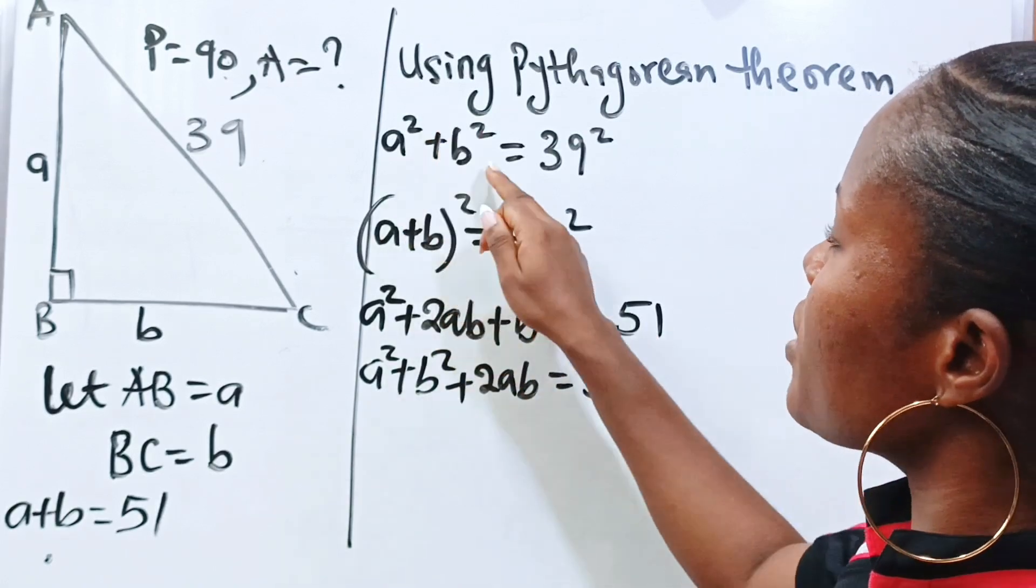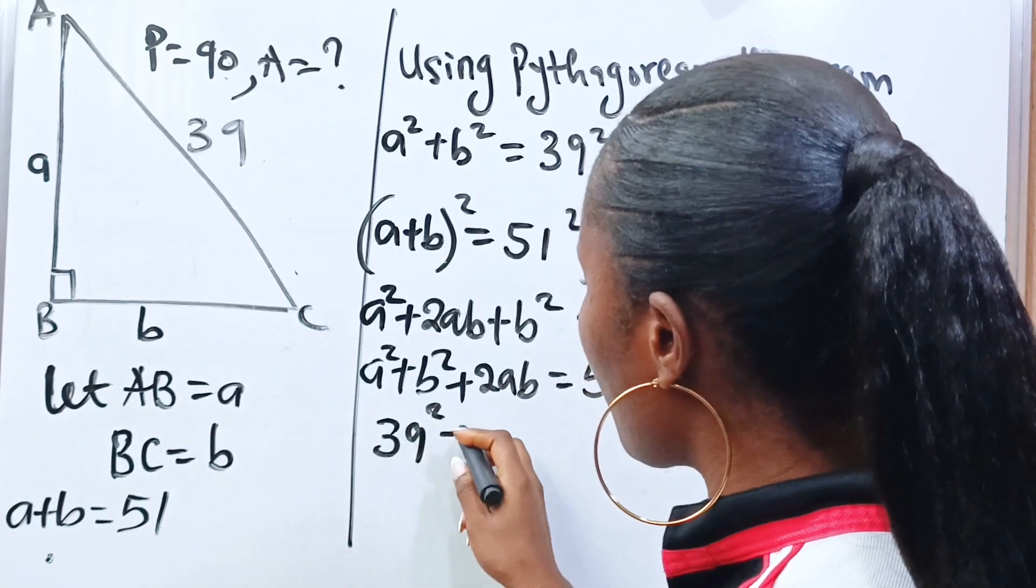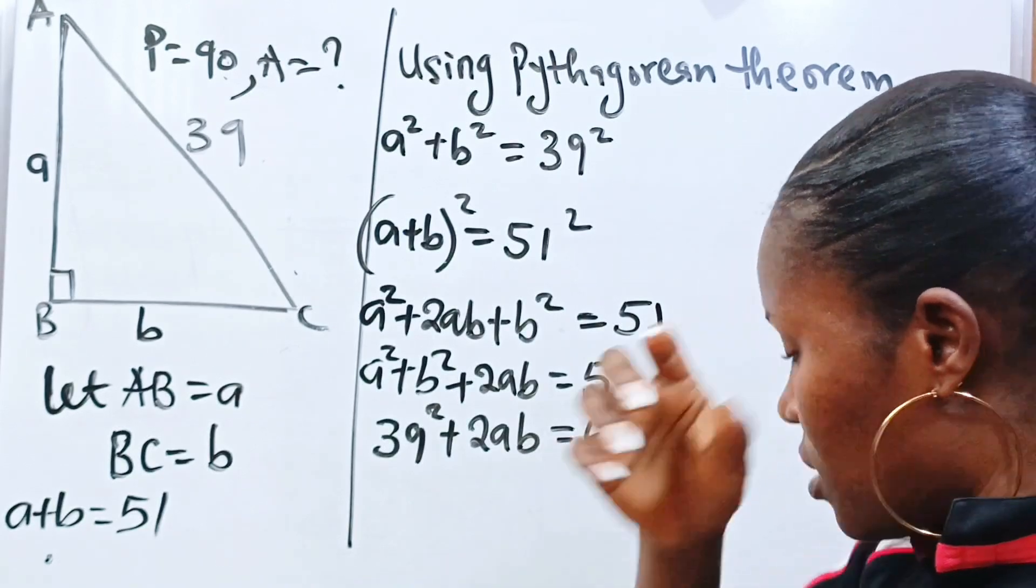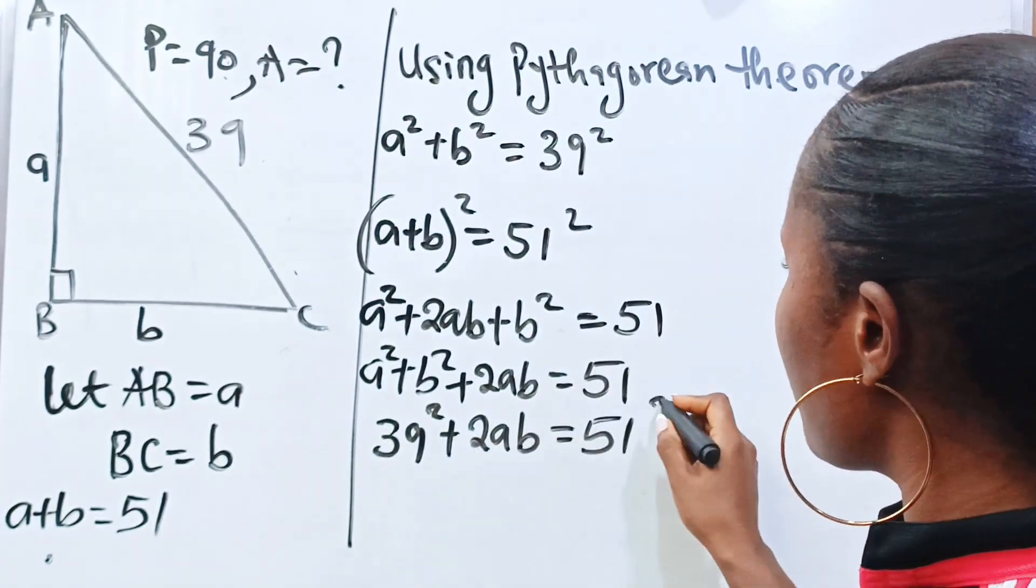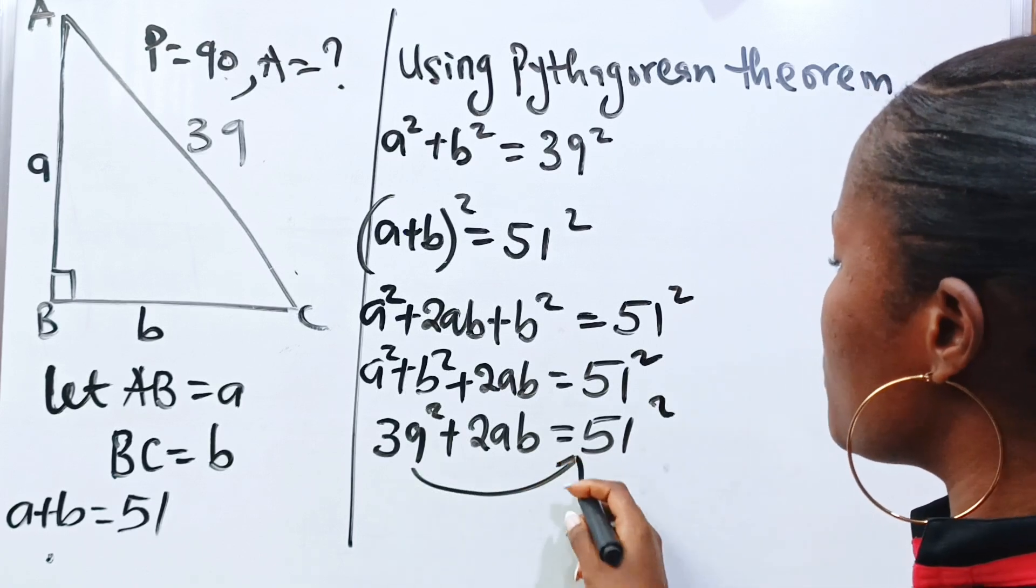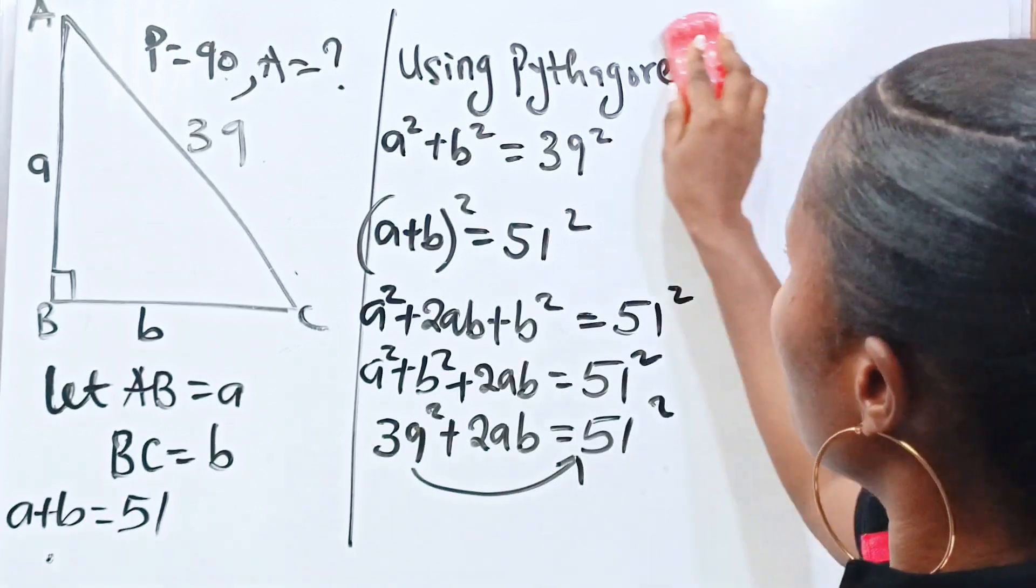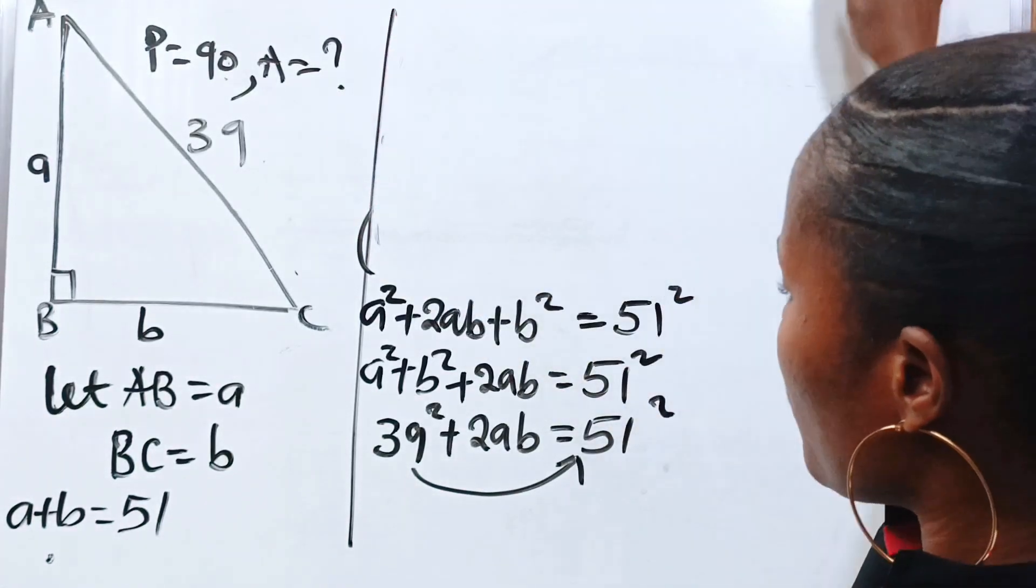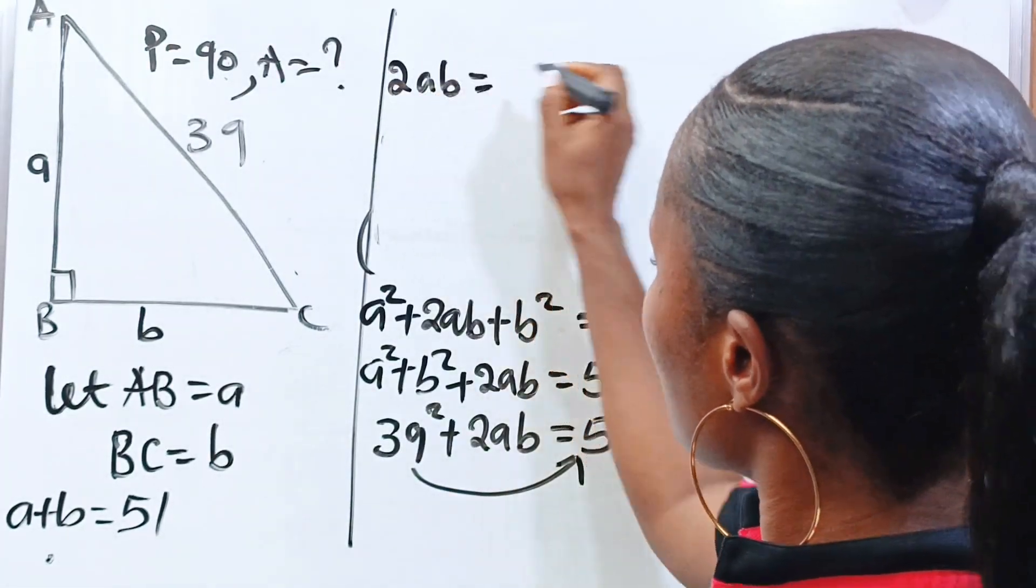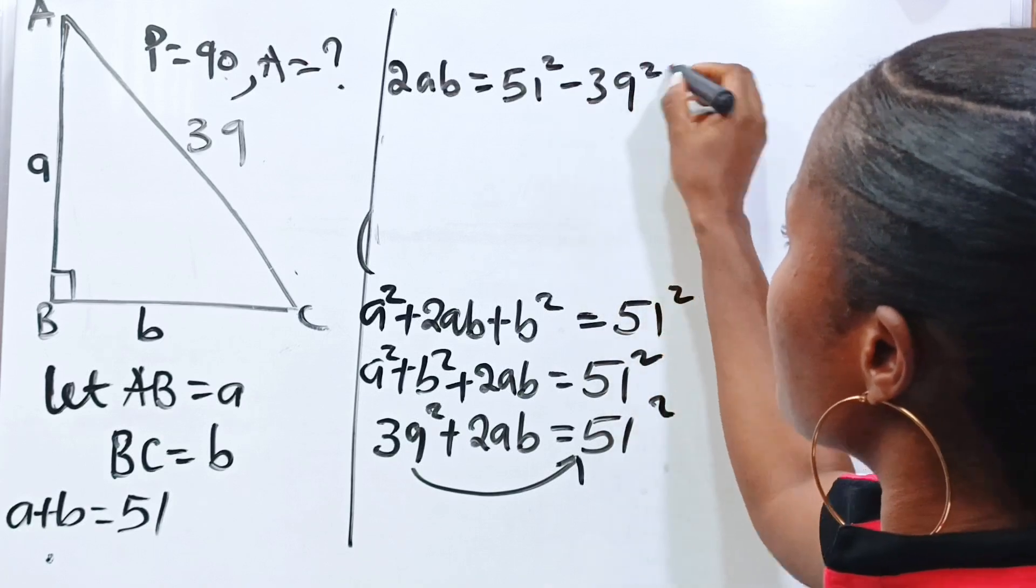So we have 39 squared plus 2ab is equal to 51 squared. Now, let us transfer this 39 squared to this side. So if we do that, we have 2ab is equal to 51 squared minus 39 squared.